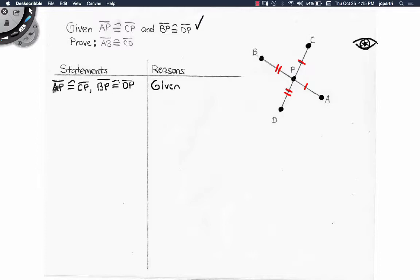Now if these really are congruent, then the measures must be equal. So AP is equal to CP in measure, and BP is equal to DP in measure. Definition of congruent segments.